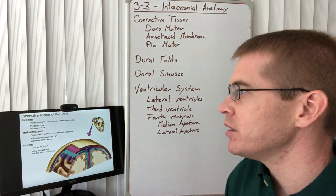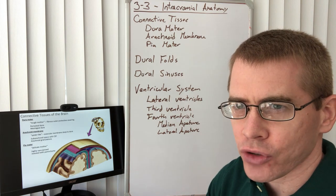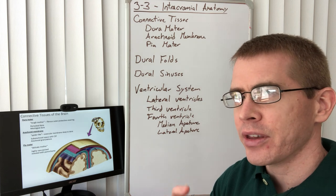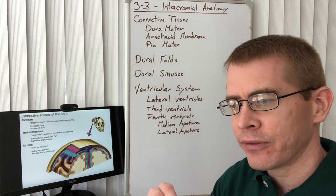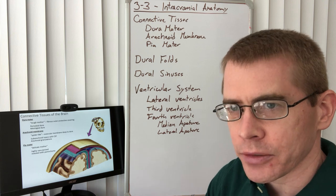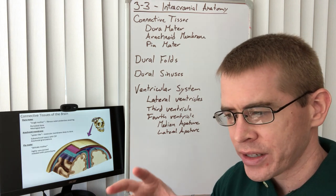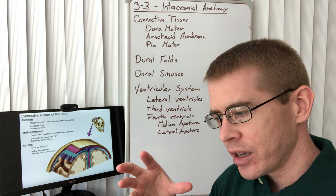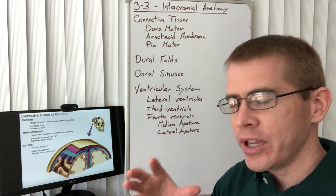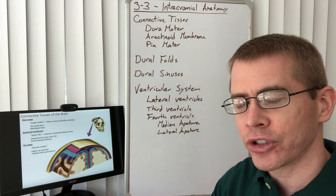There are three different types of connective tissue that surround the brain. The first is a really thick, tough, leathery layer called the dura mater. The dura mater anchors and protects the brain, and it also forms sinuses through which venous blood can drain out of the cranium. These are very important structures.